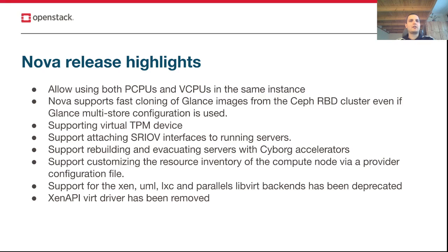In Victoria, deployers can add the provider configuration file to a Nova Compute service to define custom resources. These resources will be reported by Nova to placement, and they can be requested from your VM via flavor extra spec. Nova will manage the resource allocation for such resources.